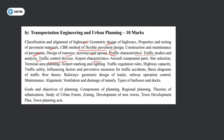Airport characteristics, aircraft components, site selection, terminal area planning, airport marking and lighting. Traffic engineering: traffic regulation rules, highway capacity, traffic safety, traffic accidents, basic diagrams of traffic flow theory. Railway: geometric design of track, railway operation, controller maintenance and alignment. Tunneling: ventilation and drainage of tunnels. Harbour and dock. Transportation engineering overall is worth R marks.